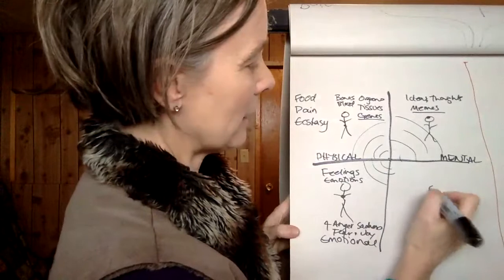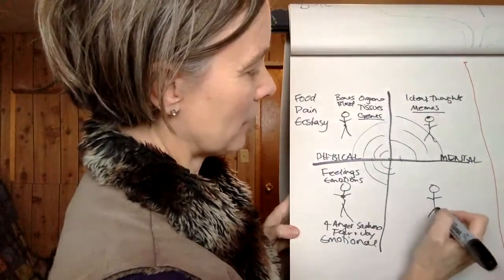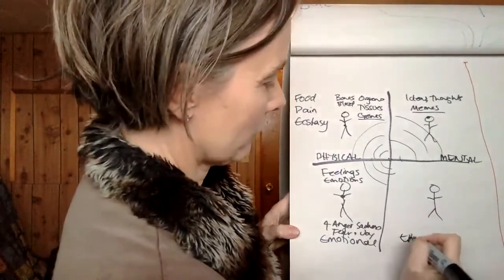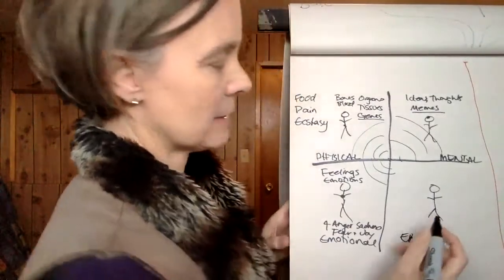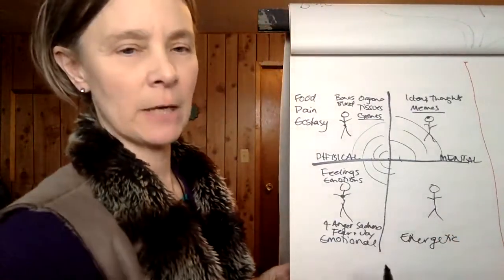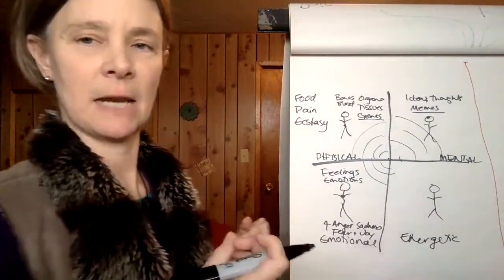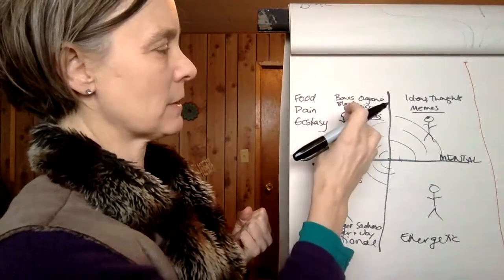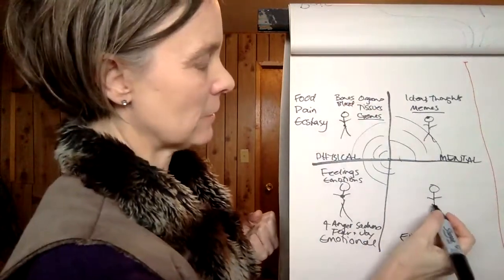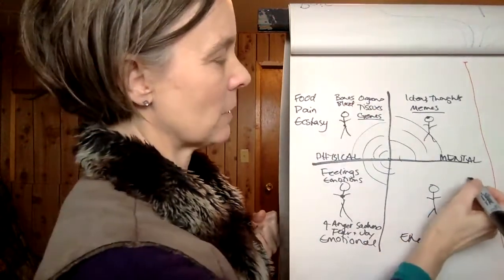The fourth body is the energetic body. The center of the energetic body is the most unstable. As the physical body and center are the most stable, the energetic body and center are the least stable.